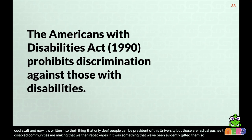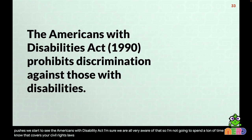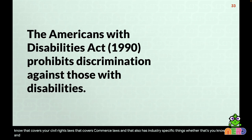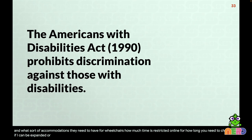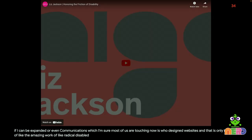After all these pushes, we get the Americans with Disabilities Act — which I'm sure we're all aware of. It covers civil rights laws, commerce laws, and industry-specific things: accommodations on planes, time restrictions for online checkouts that can be extended, and communications — which most of us touch when we design websites. And that only happened because of the amazing work of radical disabled folks.